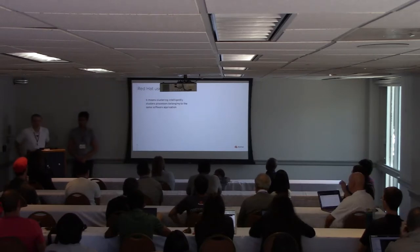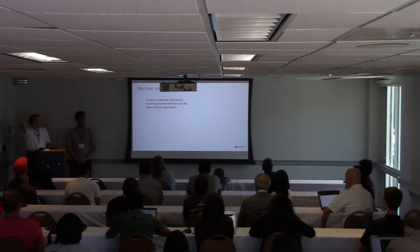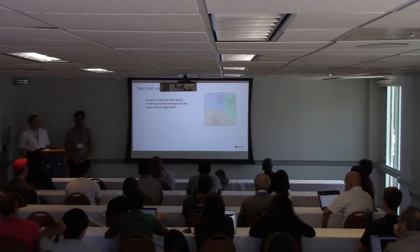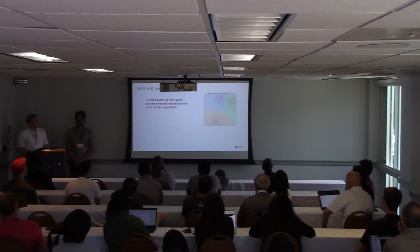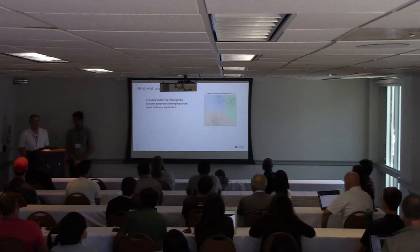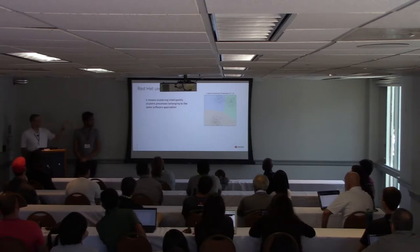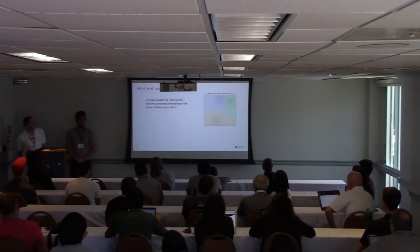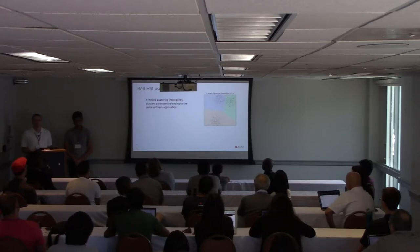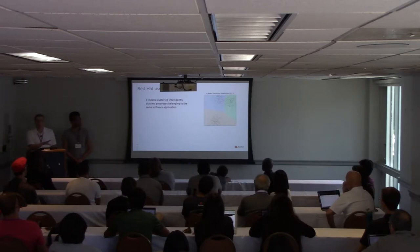Back to our use case with Grokit: we are intelligently clustering processes belonging to the same software application. Here I've got a K-Means clustering visualization with K set to three — three clusters color-coded in beige, blue, and green. Each black dot in the visualization is a running process on a system. We can really feed in millions of running processes and the algorithm will group those into similar clusters.